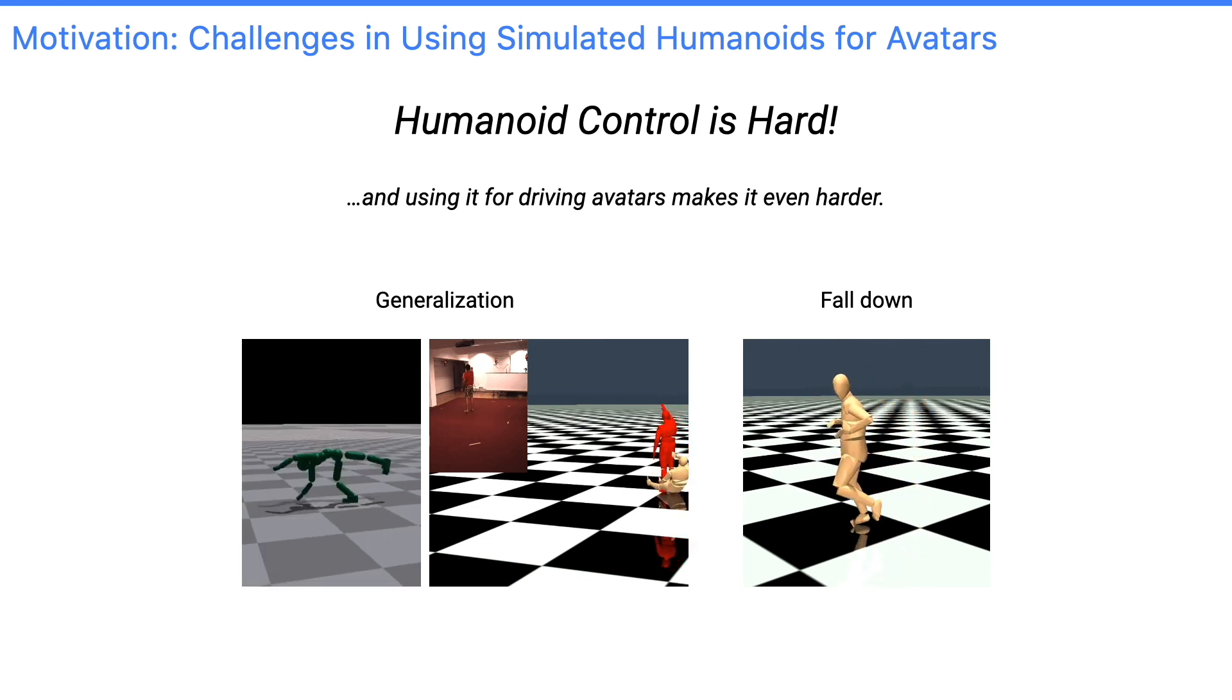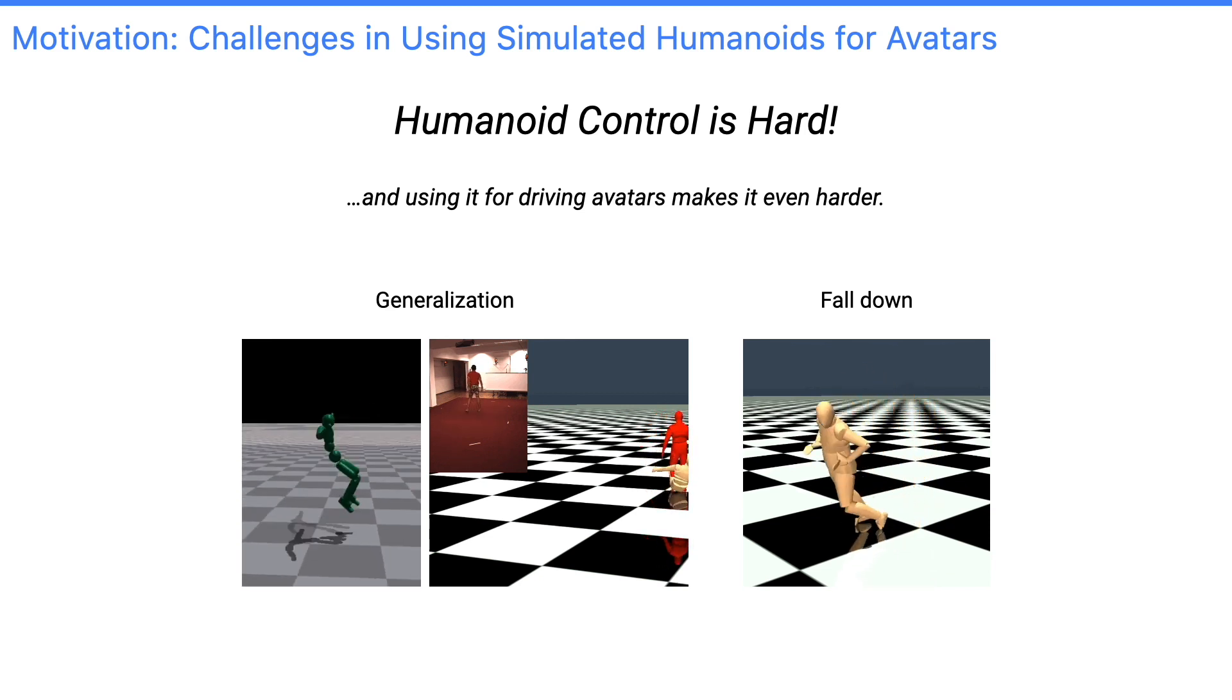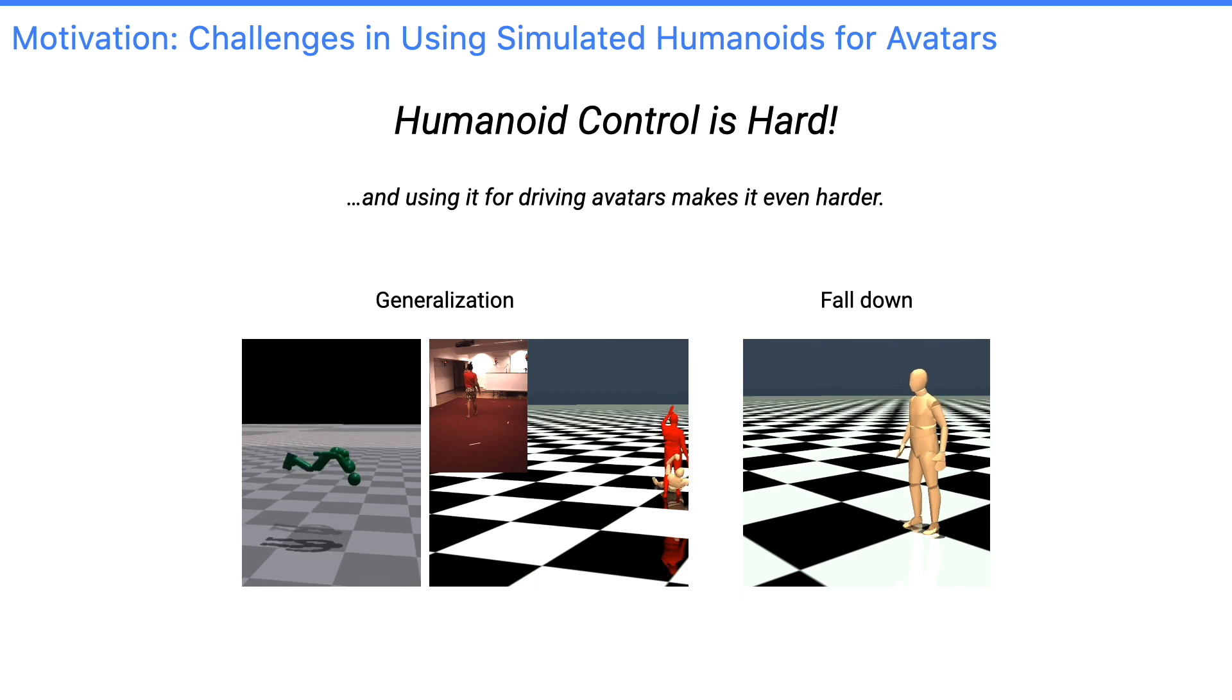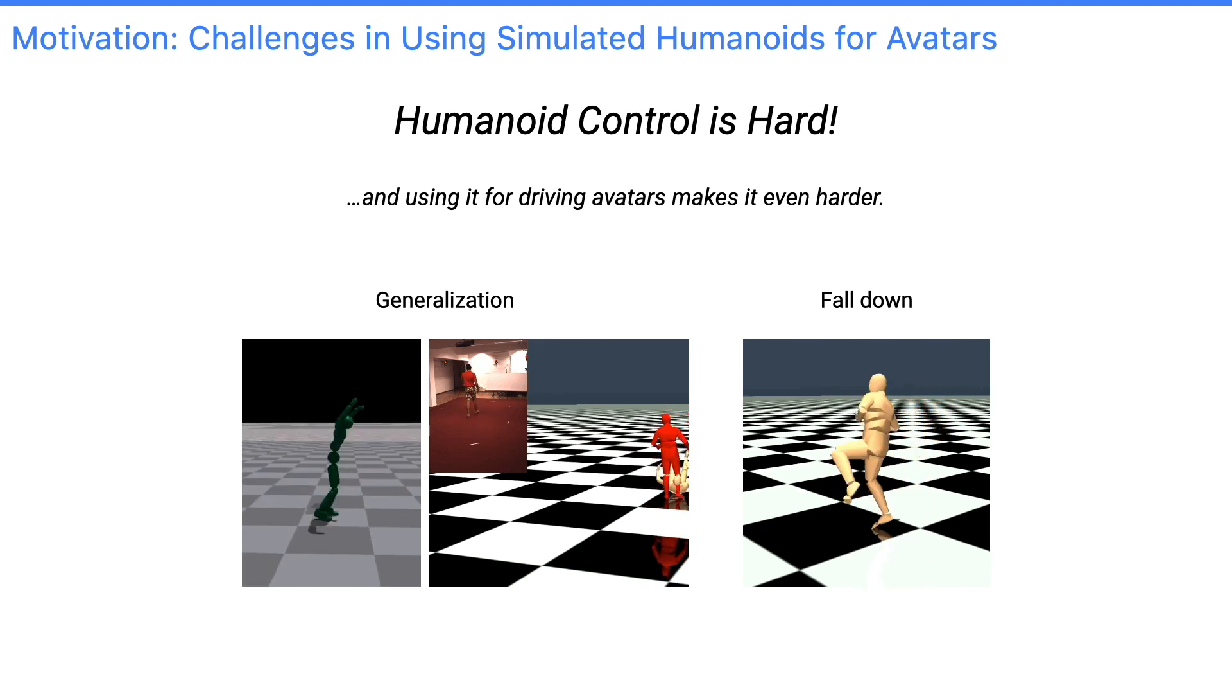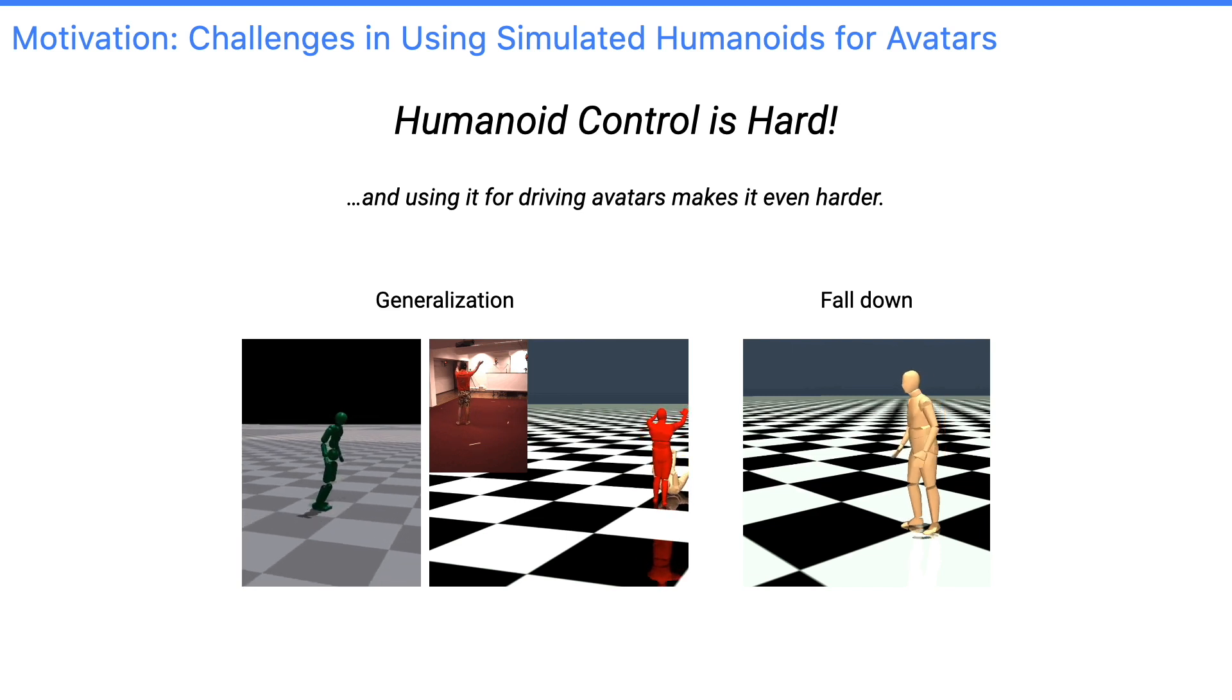First of all, you would want your humanoid to be able to perform all spectrum of human motion, like the flips right here. It also needs to be robust to noisy input, like poses estimated from videos. Second, when it cannot handle these noisy inputs, how to handle the falls?